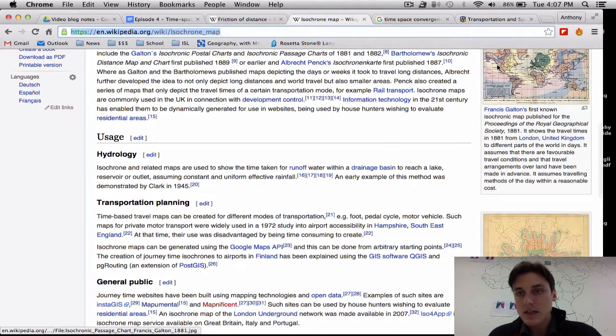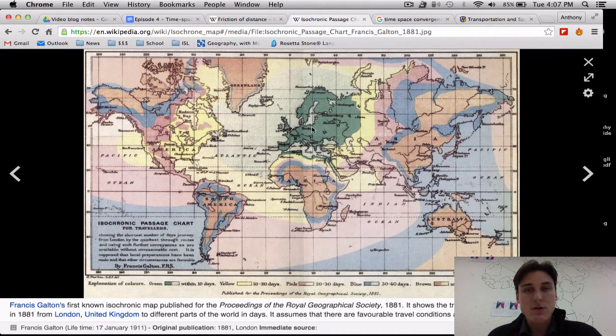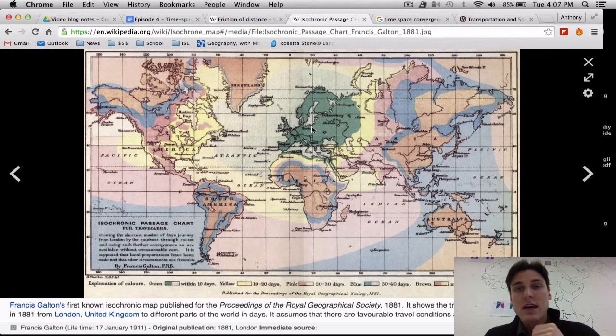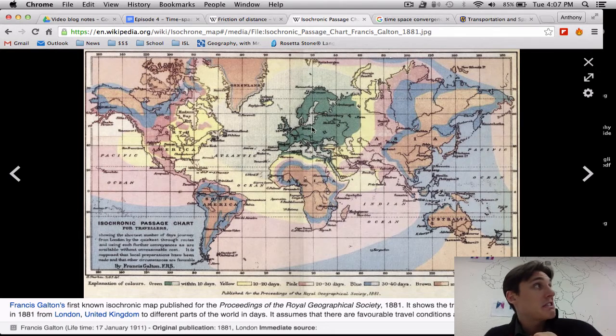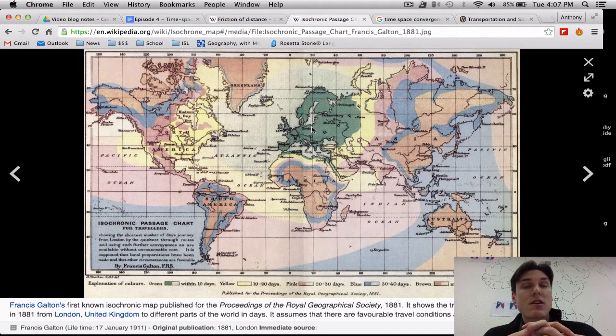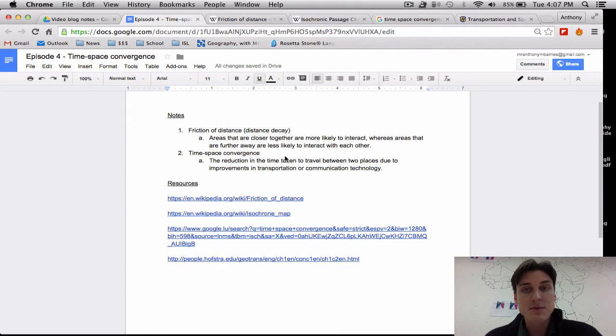Back in the day, this is from 1881, a map showing if Europe was the center of the universe, how long it would take to get from Europe to other locations around the planet. You'll notice that it would take 10 to 20 days just to get to the United States. And now you can get to the United States in about six hours flight, depending on where you leave from, but probably about six to seven hours. And depending on what type of transport you take, if you take a Concorde, I believe one of the fastest flights recorded across the Atlantic is a matter of hours. So that is friction of distance and time-space convergence because we have better communication and better transport.